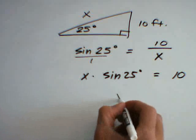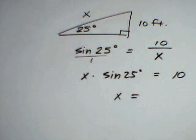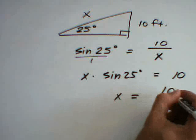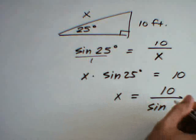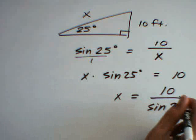Now, to solve for x, we need to divide both sides of the equation by the sine of 25 degrees. So, this gives us 10 divided by the sine of 25 degrees.